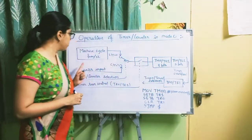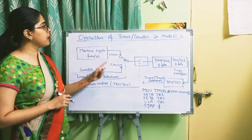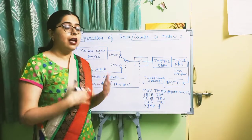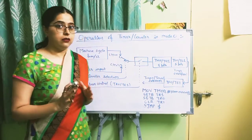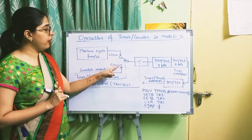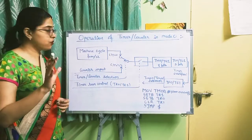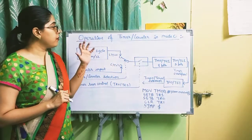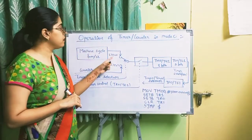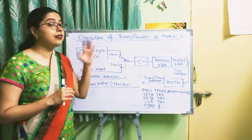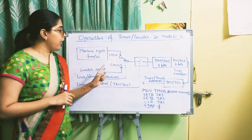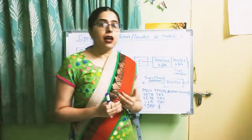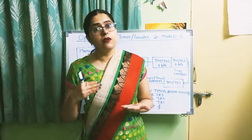This diagram shows the operation of a timer/counter in Mode 0. There is a machine cycle block because the timer increments according to the machine cycle. There are two points: C#T = 0 and C#T = 1, acting like a switch. When C#T = 0, the timer/counter operates as a timer (timer mode is selected). When C#T = 1, counter mode is selected. So the C#T bit decides whether the timer/counter operates as a counter or a timer.